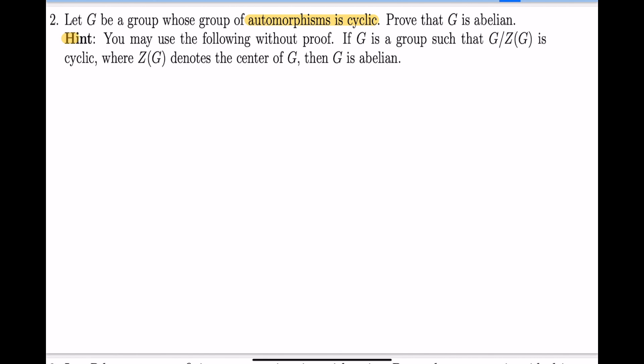I think the hint in this case is extremely important. If this hint hadn't been given, I definitely would have struggled more to come up with a solution. The hint says you may use the following without proof: if G is a group such that G mod Z(G), the center, so the group mod its center is cyclic, then the group itself has to be abelian.